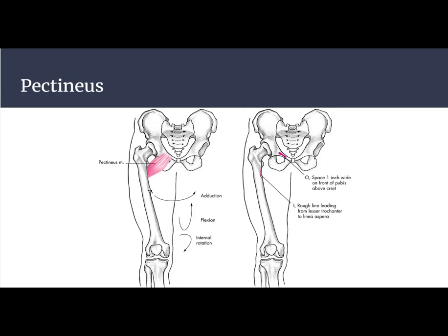Finally, we see the pectineus, which is the most superficial on the ramus of the pubis. It's a short muscle, but it is an adductor and a hip flexor.